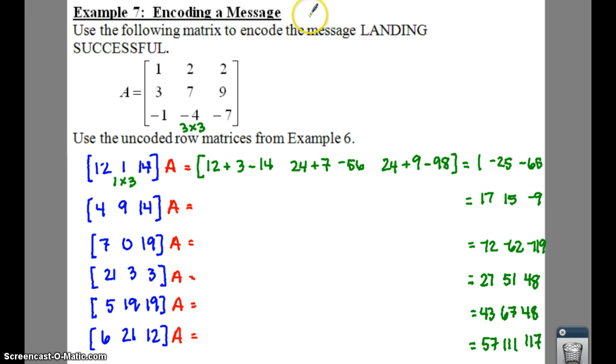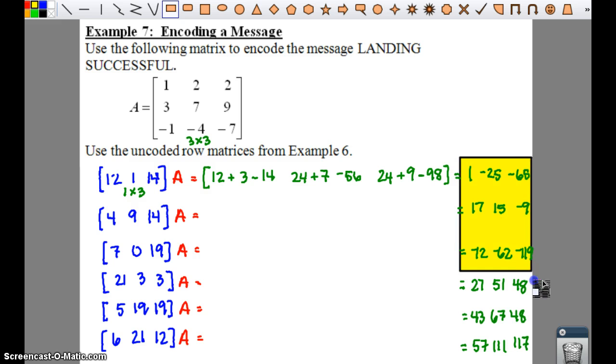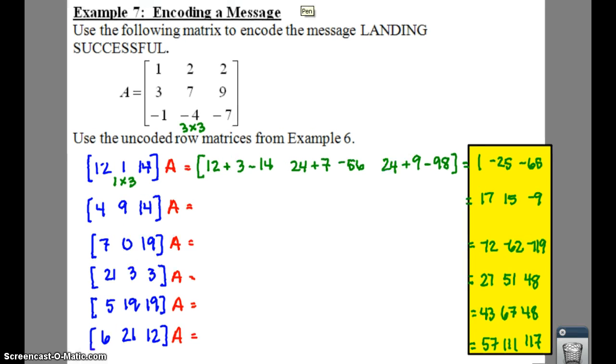These are your encoded row matrices. So it's all these numbers. It doesn't have to be in a matrix. It's just a list of numbers that you would put together and you would give to a neighbor or send to your allies. Because we're going to bomb somebody. Let's not go that crazy.